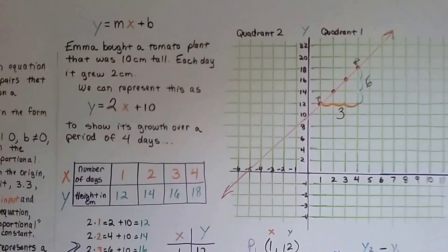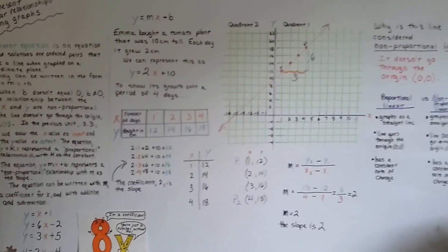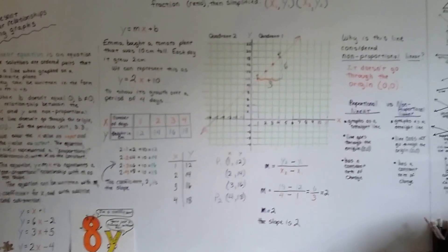So that's how we can represent linear relationships using graphs. That wasn't too bad, was it? Did you understand that?